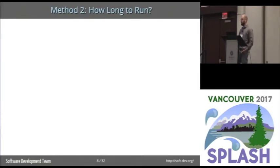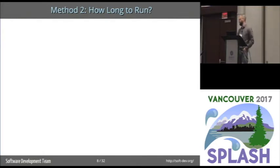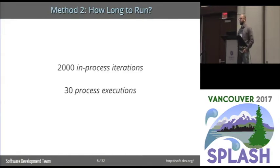How long should we run these things? How long do you normally run your benchmarks — 30 or 50 times? We went for way more. We decided to use 2,000 in-process iterations, and then we decided to repeat that 30 times. That gives us a huge amount of data to work with.